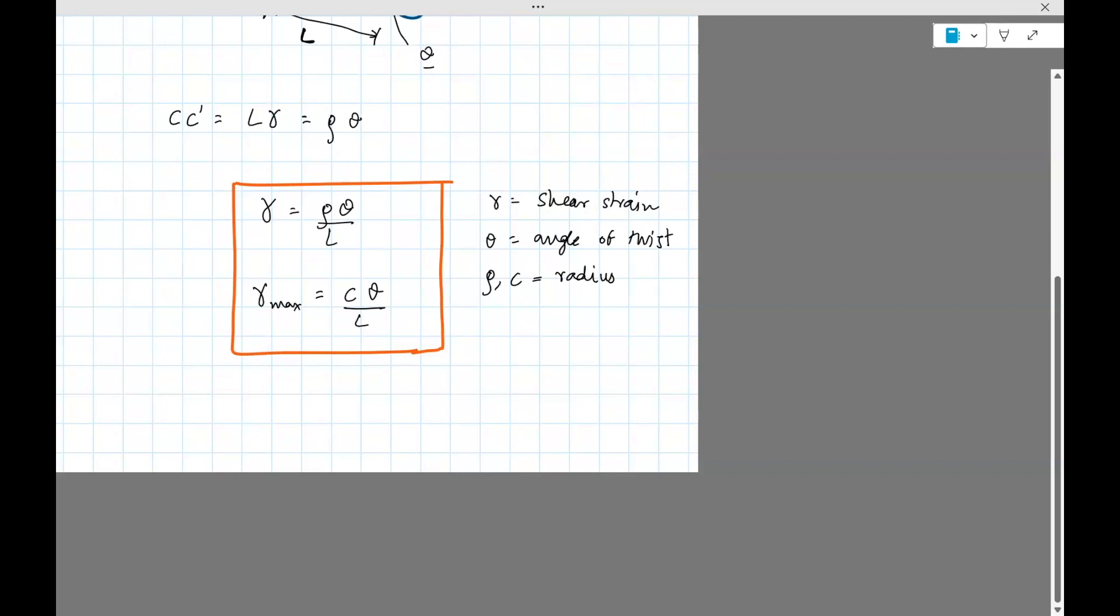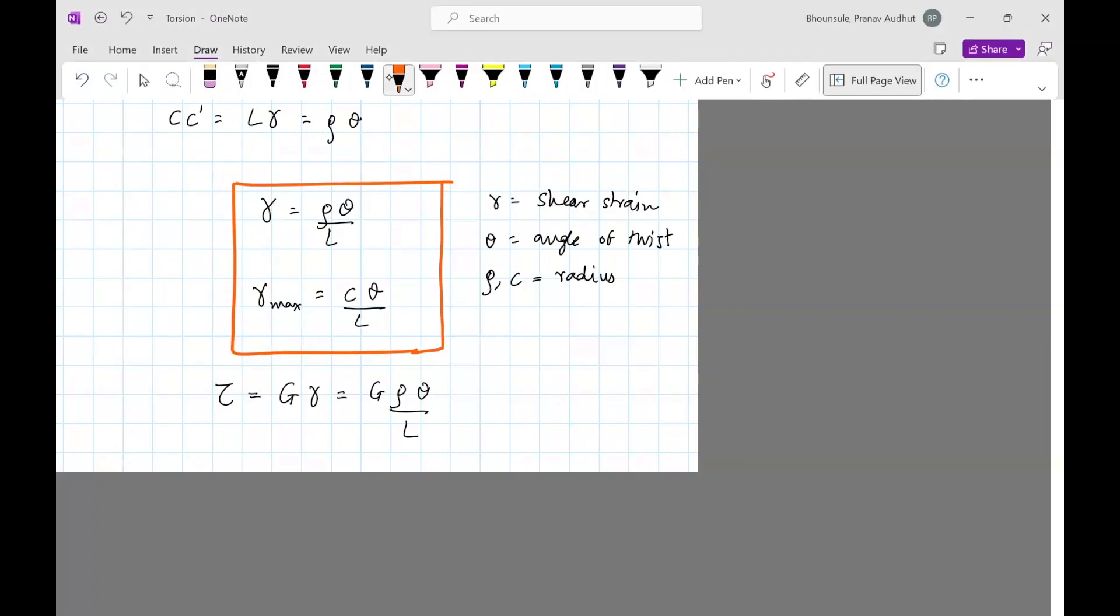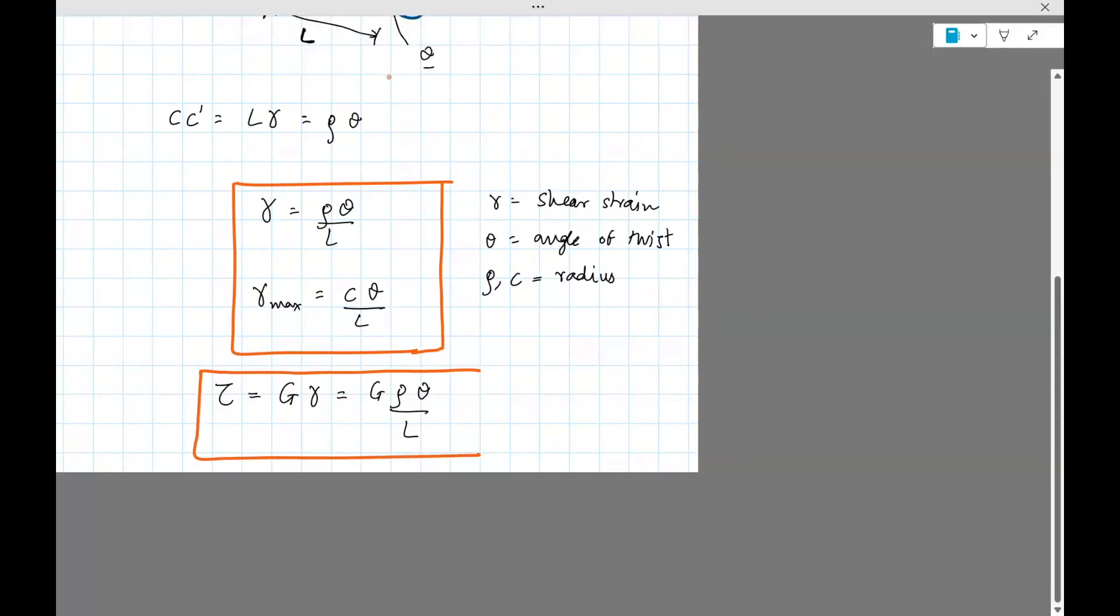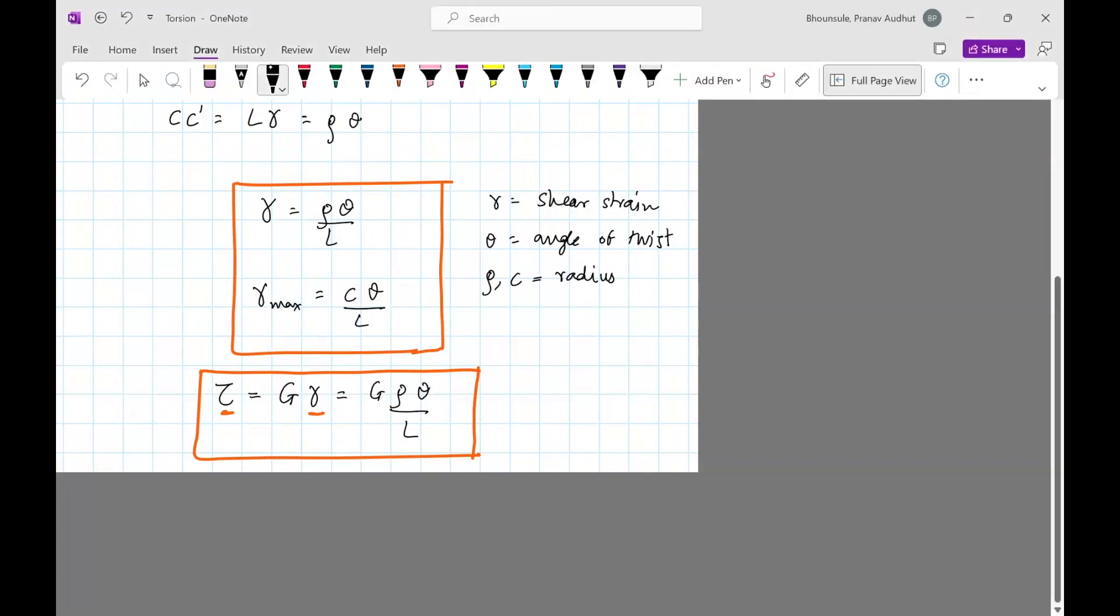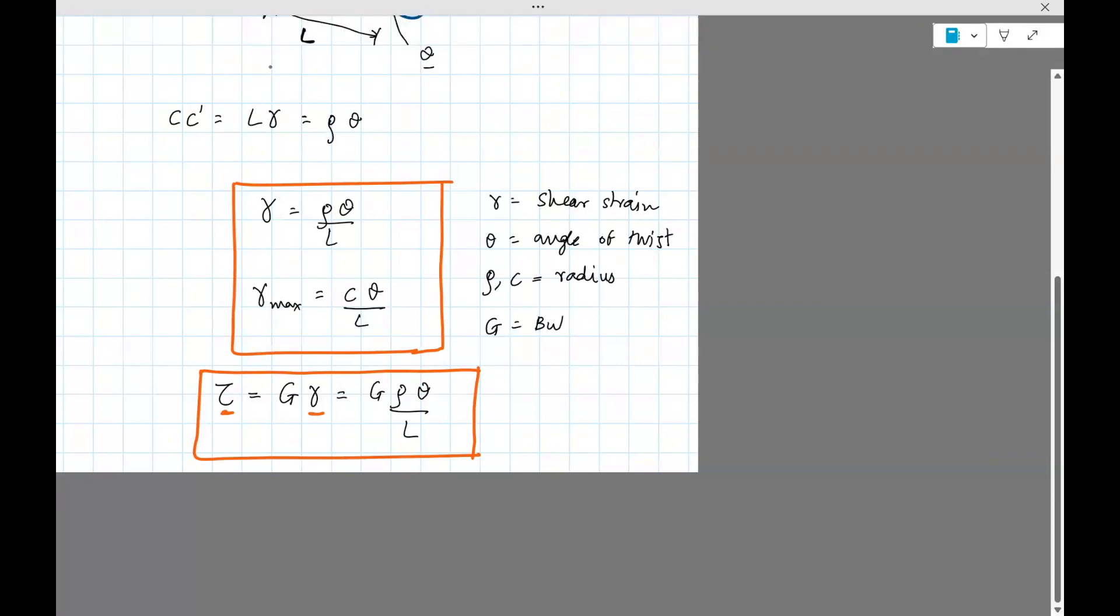So with that, this is a formula we've done earlier, that is if you want to find the shear stress, it's the bulk modulus G times gamma. Or since you know the formula for gamma now, it's G rho theta divided by L where I use the first expression. So this is another formula which is useful. It helps you to compute the shear stress as a function of the radius, length and the angle of twist. Or if you have the shear strain, you could use shear strain too. So here G is bulk modulus, so constant for the material.